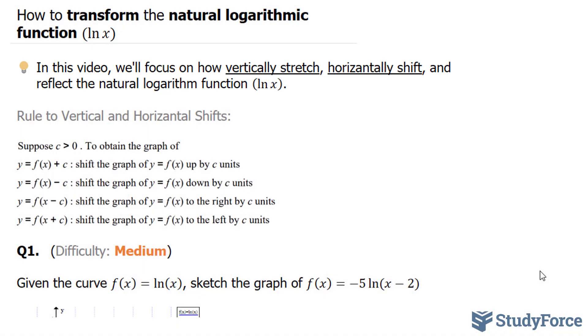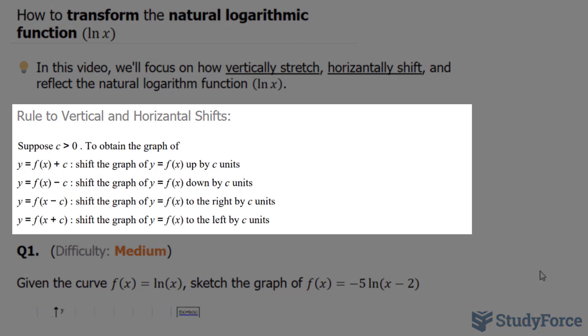To start, these are the rules to vertical and horizontal shifts. Notice that if you have anything added to the function or subtracted, the graph will move up or down, so you'll have a shift vertically. And similarly, if you have anything being added to the variable, as in these two cases below, you'll be moving your function left or right.